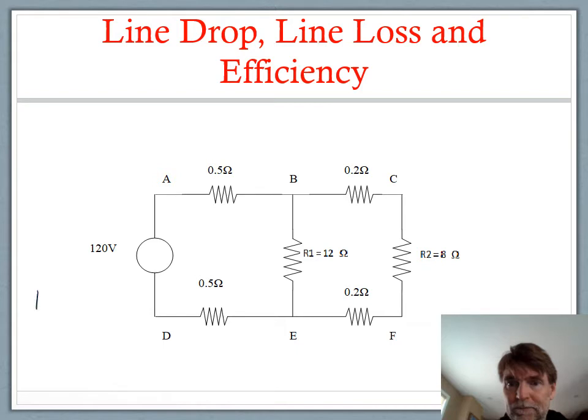Now we can calculate our total current. We have 120 volts divided by 5.94 ohms equals 20.2 amps. So we've got IT = 20.2 amps.